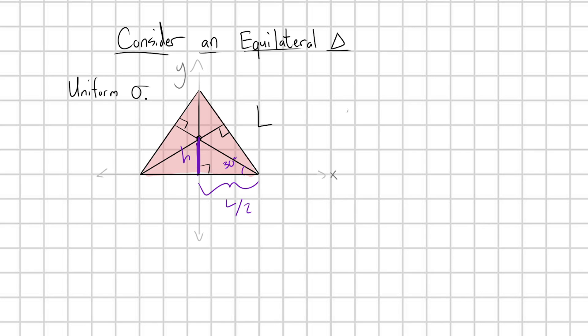Just a really quick geometry, SOHCAHTOA. If we take the tangent of 30 degrees, we're going to have h over L over 2, or in other words, my height h is equal to L over 2 tangent of 30 degrees.